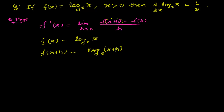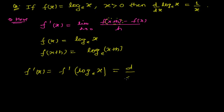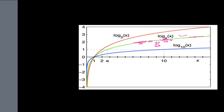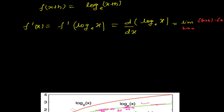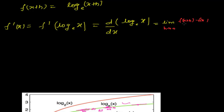Now let's find out the derivative of our function f(x). The derivative of log x to the base e, or d/dx of log x to the base e, is equal to the limit when h tends to 0 of [f(x + h) minus f(x)] divided by h. So that gives us the limit as h tends to 0 of [log(x + h) to the base e minus log x to the base e], all divided by h.